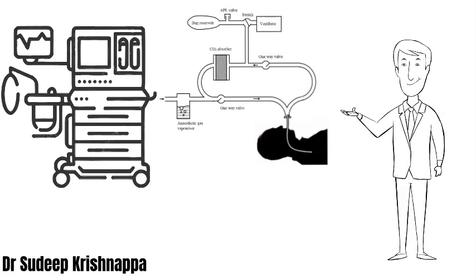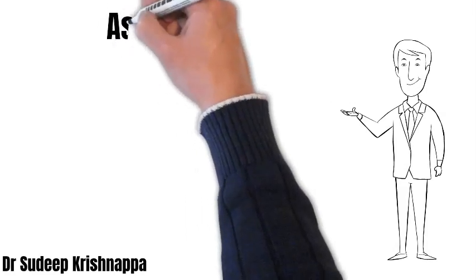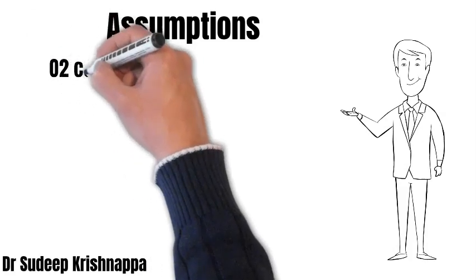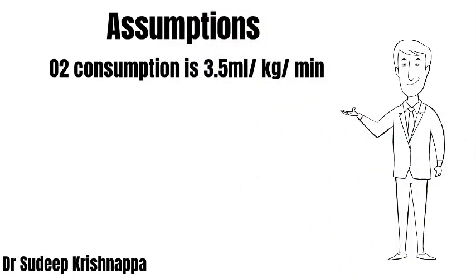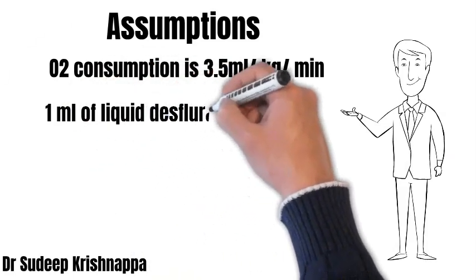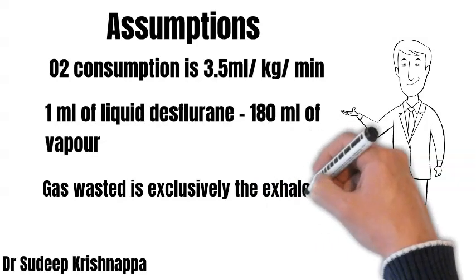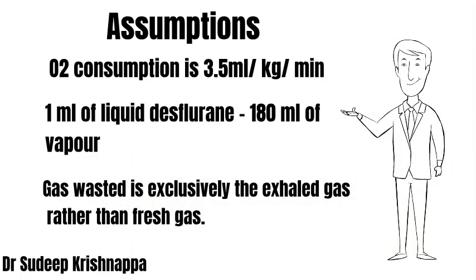Even though the degree of wastage is obvious, it becomes very striking when we put numbers into context. Before the calculations, certain assumptions have been made: first, oxygen consumption is approximately 3.5 mils per kg per minute; second, 1 ml of liquid desflurane yields about 180 mils of vapor (slightly rounded to simplify calculations); and third, the gas vented out of the system is exclusively exhaled gas rather than fresh gas or a mixture.